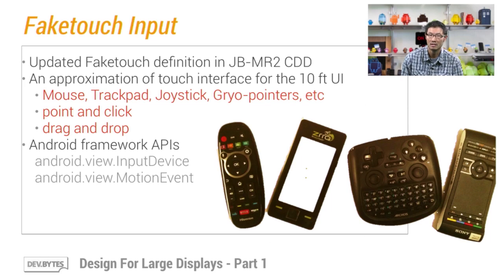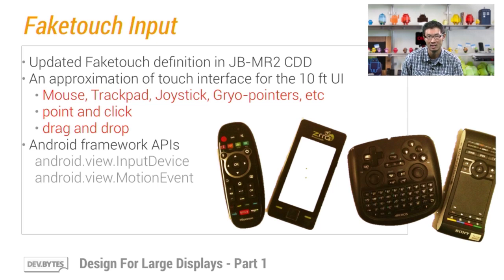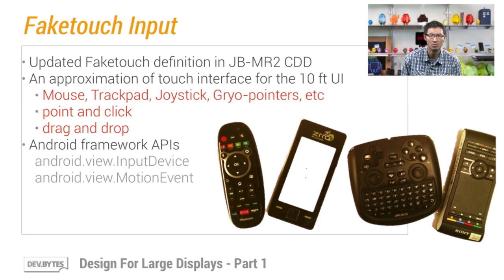These new form factors, like smart TVs, are typically designed for the living room and provide a 10-foot viewing experience — in other words, a non-touch UI. In the new Jelly Bean MR2 CDD, we have a new definition for fake touch input, which is basically an alternative to the conventional direct touch interface, and provides support for point-and-click and drag-and-drop functionalities from a distance. Developers should improve their UX for fake touch devices. The Android framework provides a set of APIs to help you define and collect these input events. We encourage you to read through these CDD definitions and framework APIs to understand how to take advantage of this input method.